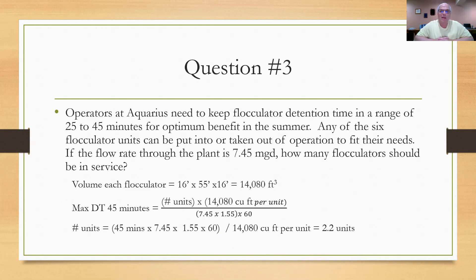When they come up with 2.2 units, the operators have to make a decision. We probably don't want to put on three because I'm going to be in there too long. Two might not be enough, but since I solved that for 45 minutes, putting on two units and not three, I think would still get us in a 40-minute range, or 36-minute range, or something like that. So we're still in pretty good shape. So here the operators of Aquarius need to make a decision every time they change flow rate. They've got to determine, is it worth putting on another flocculator? Should I leave things the way they are?